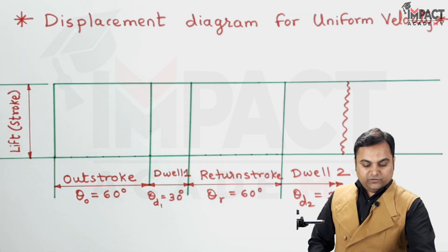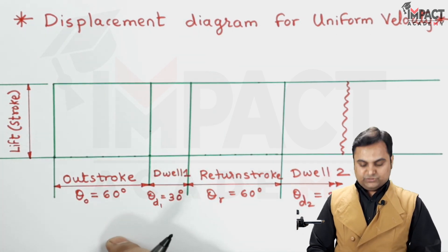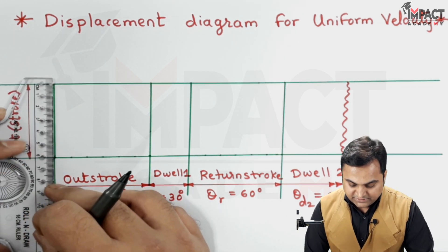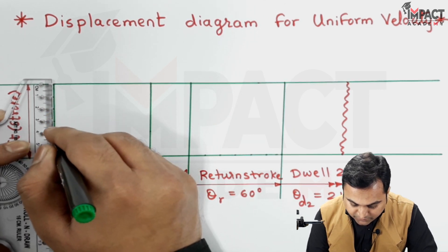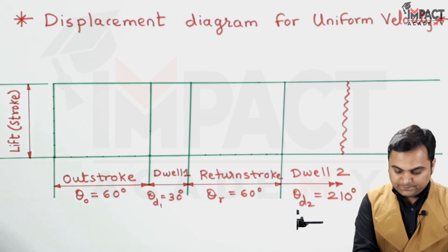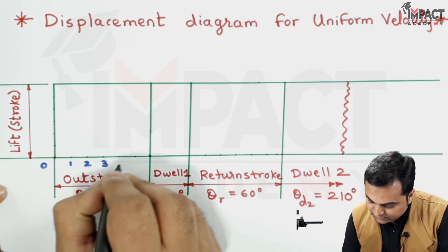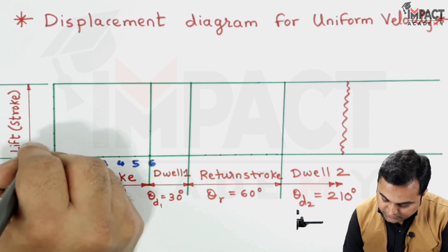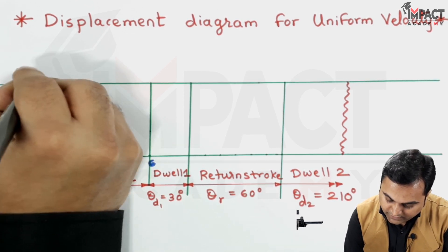Now how to plot the uniform velocity graph? For that, lift also needs to be divided into 6 equal parts in the similar manner like I have divided outstroke and return stroke. So I have taken 6 centimeters here, dividing it taking 1 centimeter, 1 centimeter division. Now I will just give the notation over here, starting from 0: 1st, 2nd, 3rd, 4th, 5th and 6th. Similarly for the lift: 1st, 2nd, 3rd, 4th, 5th and 6th.